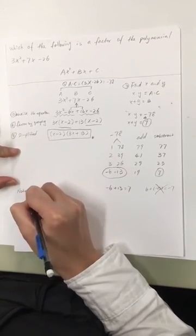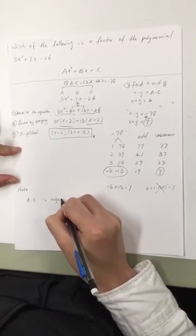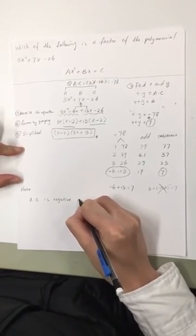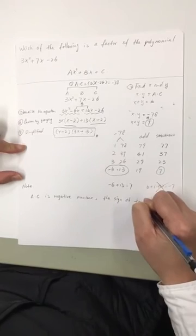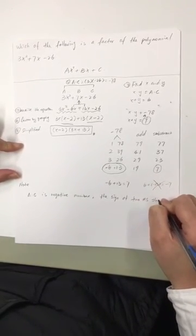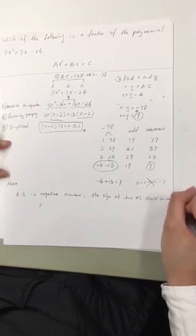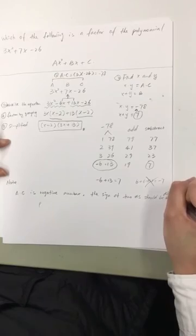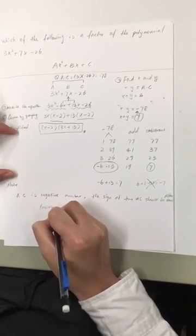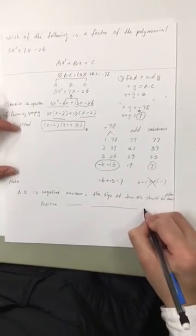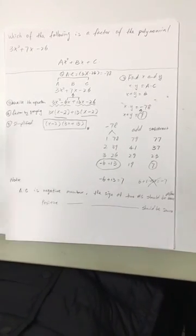One more thing I wanted to talk about. If the product of a and c is negative, the sign of two numbers should be different. If the product of a and c is positive, the sign of two numbers should be same.